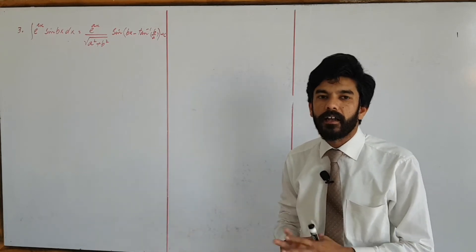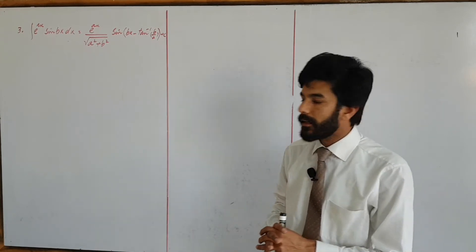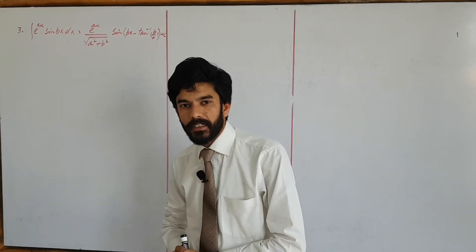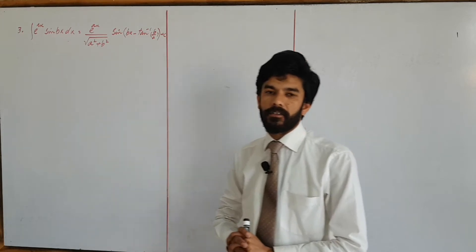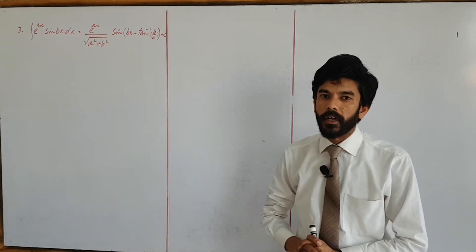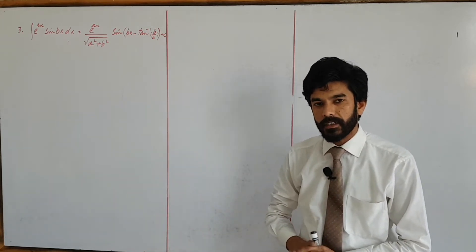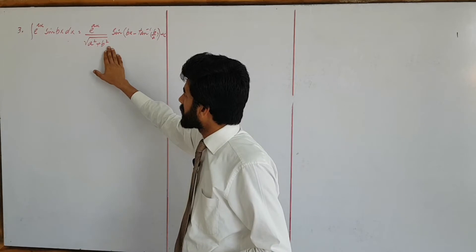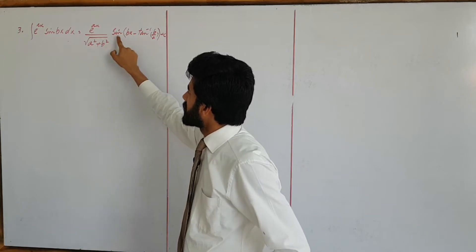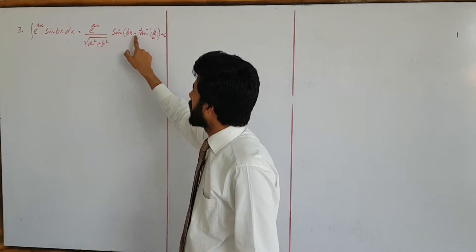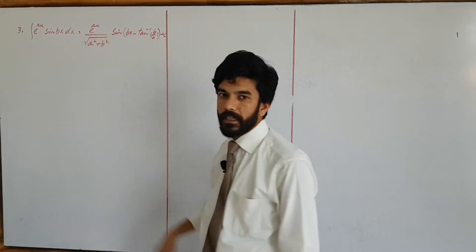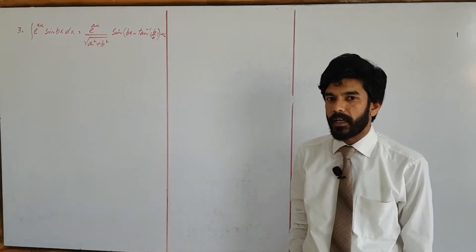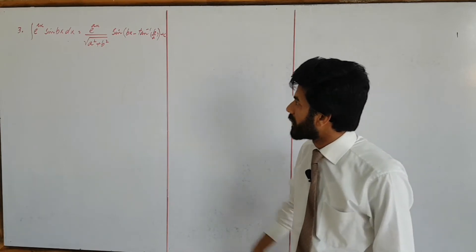Question: integral of e to the power ax sin vx dx is equal to e to the power ax upon square root of a squared plus v squared, into sin(vx minus tan inverse v over a), plus constant of integration.